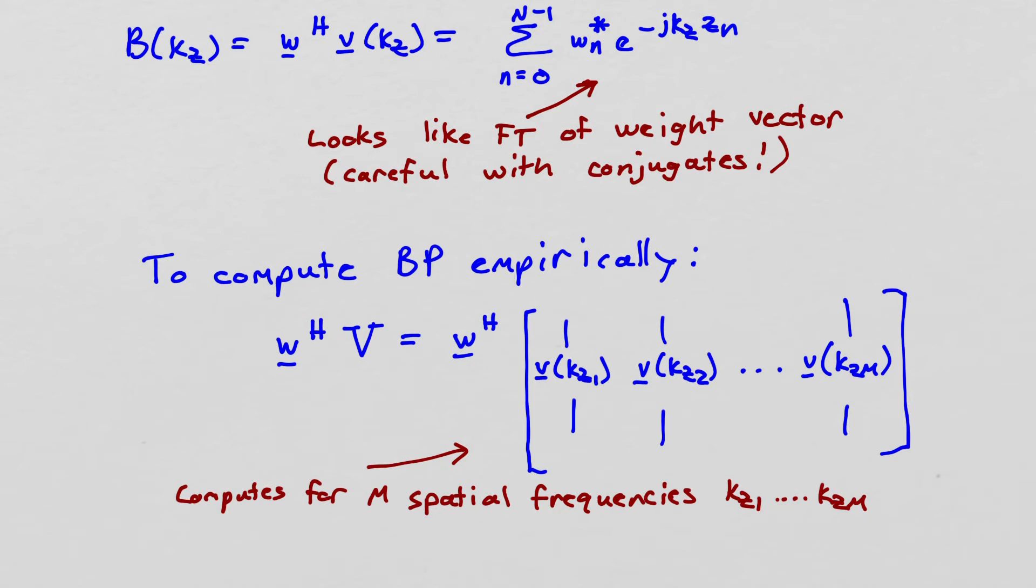It's the sum over these n elements, n equals 0 to capital N minus 1. And it's w sub n, the weight vector value at the nth element, conjugated because of the Hermitian, times e to the minus j kz z n. And this looks an awful lot like a Fourier transform of the weight vector.